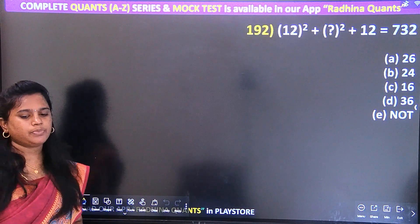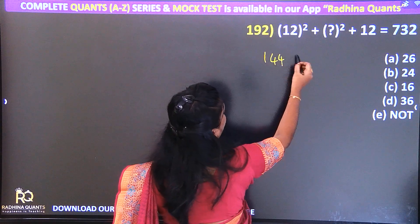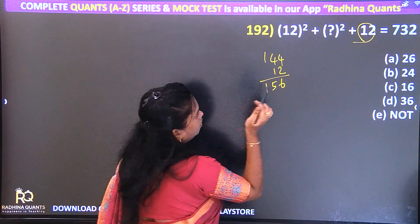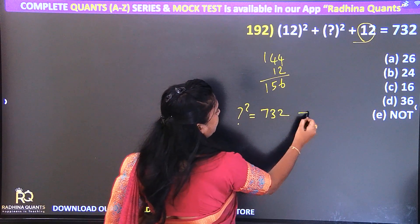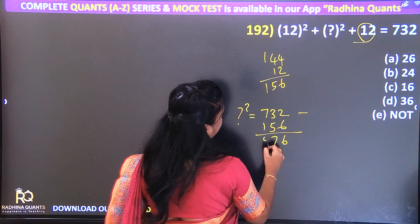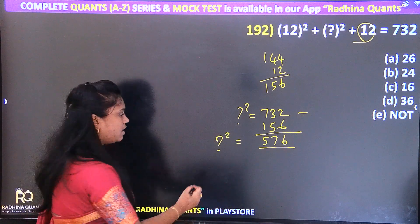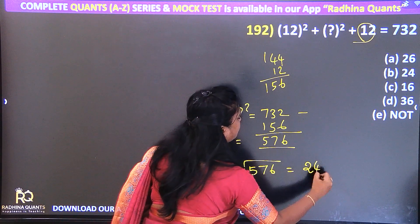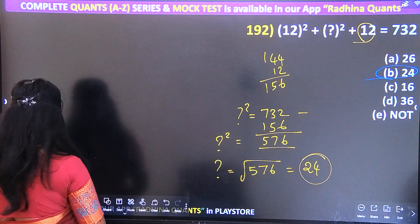Question 192: 12 squared = 144, plus 12 = 156. Question mark squared equals 732 minus 156. So question mark squared equals 576, and the answer is 24. Option B is the right answer. Very easy — next question.